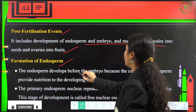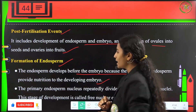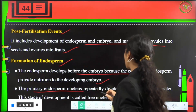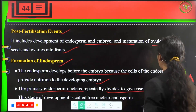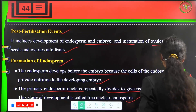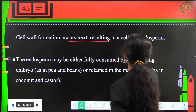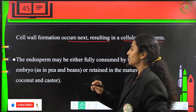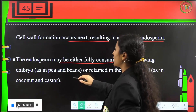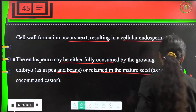Formation of endosperm develops before the embryo because endosperm cells provide nutrition to the developing embryo. The primary endosperm nucleus repeatedly divides to give rise to free nuclei, a stage called the free nuclear endosperm stage. Cell wall formation occurs next, resulting in cellular endosperm. Endosperm may be fully consumed by the growing embryo as in pea and beans, or retained in the mature seed as in coconut and castor.